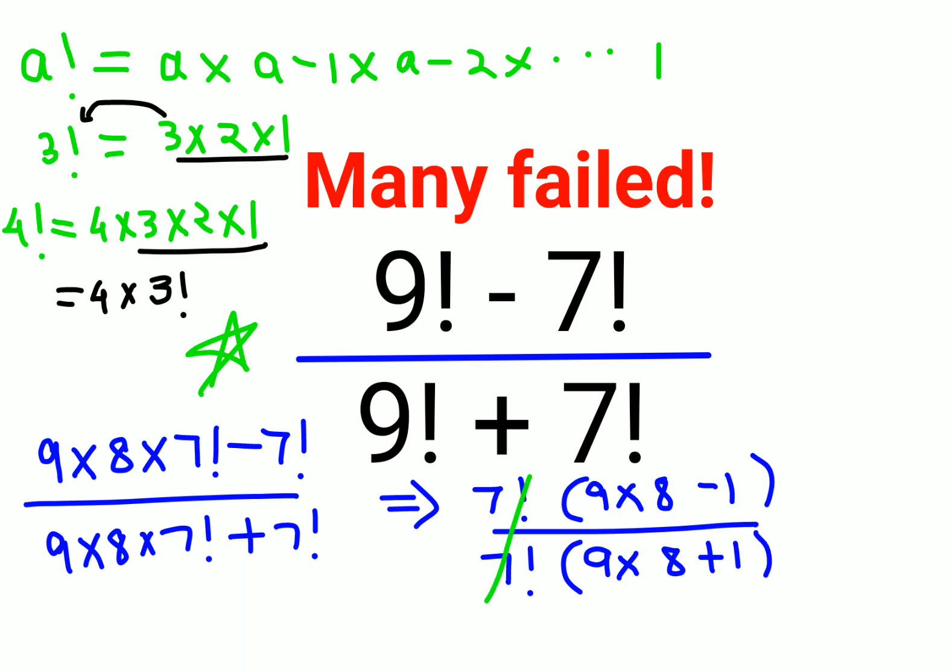Now what happens is this gets cancelled. So what you are left with is basically 72 minus 1 over 72 plus 1. So the answer comes out to be 71 over 73.